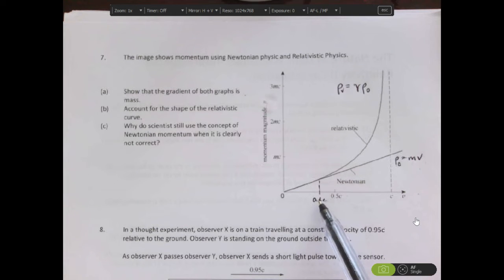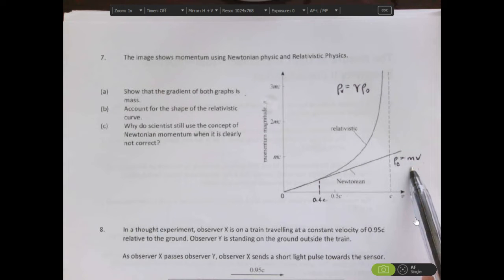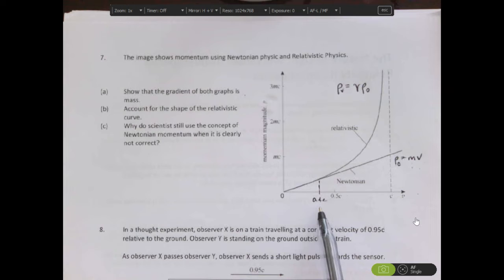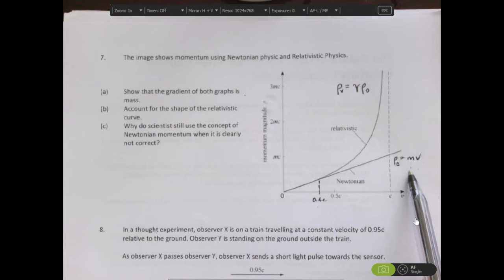As a result, speeds below this you wouldn't notice any relativistic change in the momentum. So this format over here works really well for the majority of cases. 0.4c is very fast. In our daily lives, we wouldn't see things moving at this speed. So Newtonian physics is a good approximation to what we need for our daily lives.